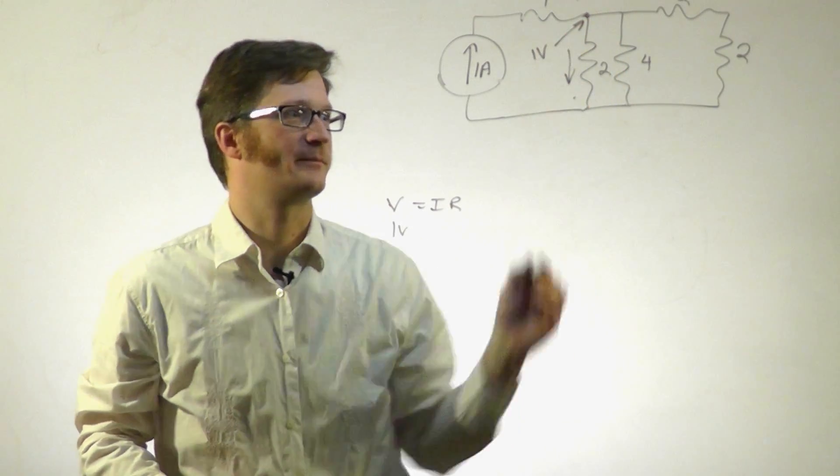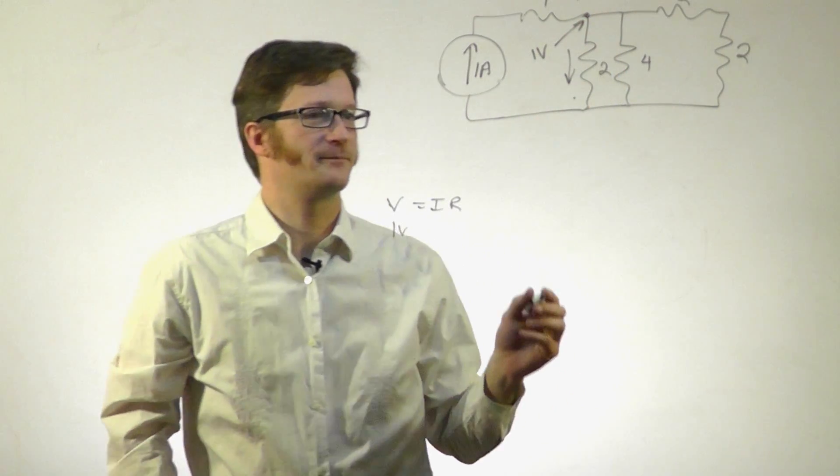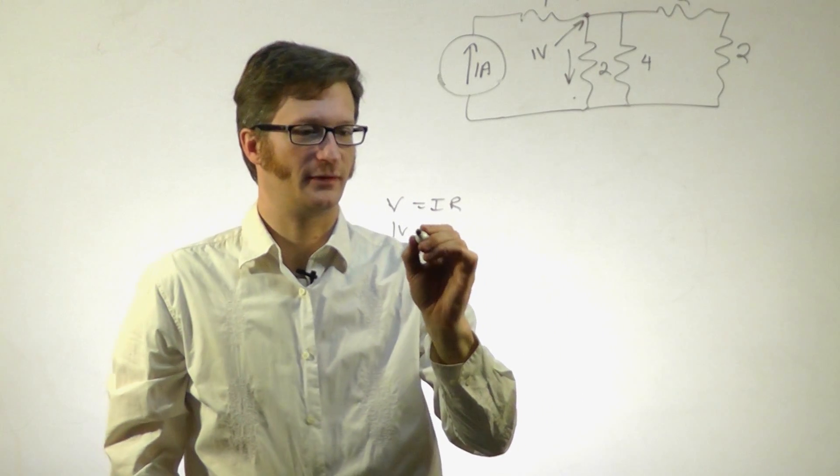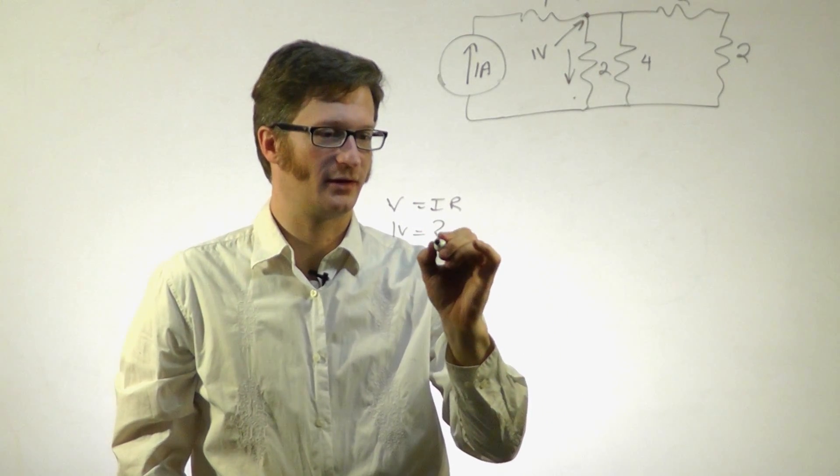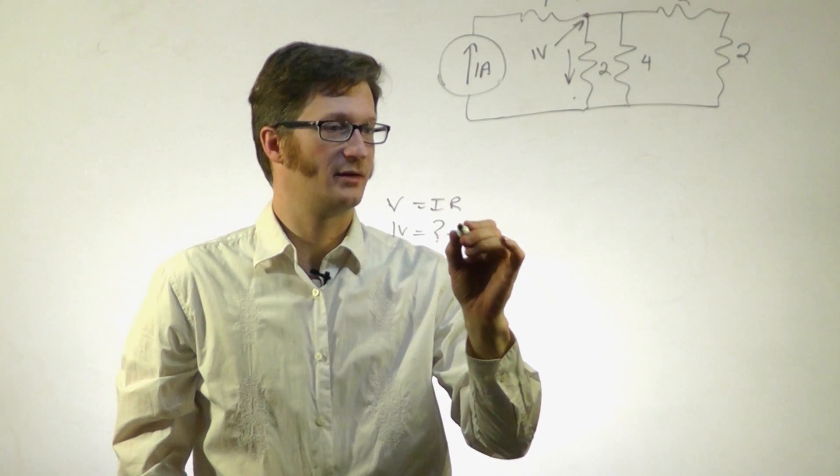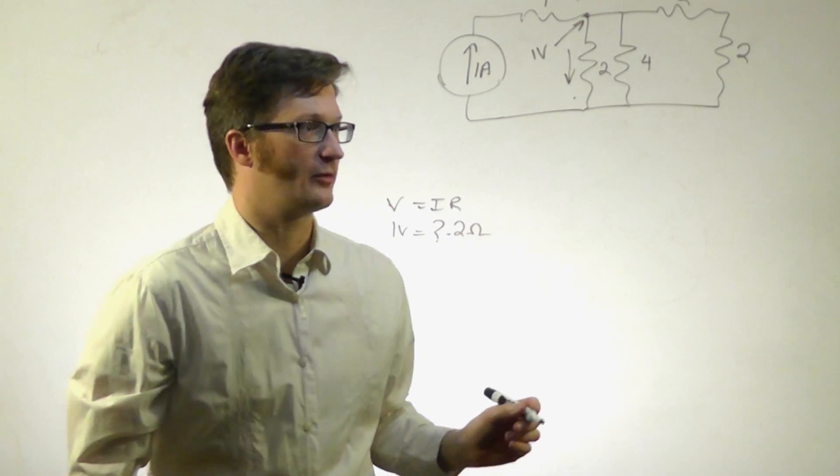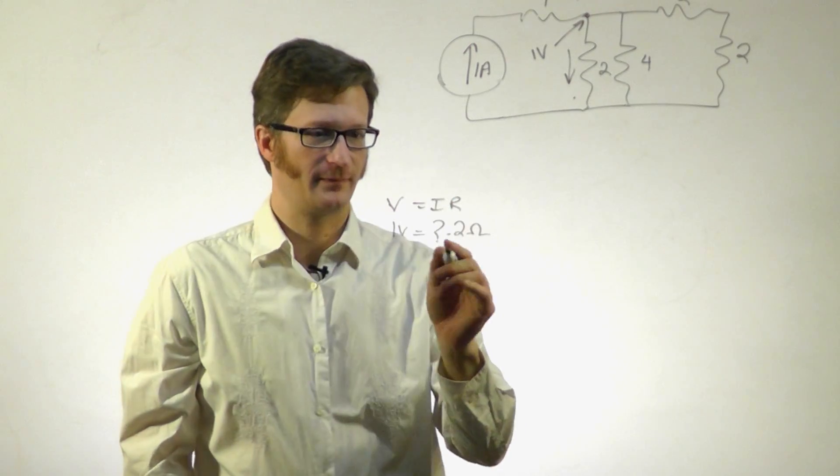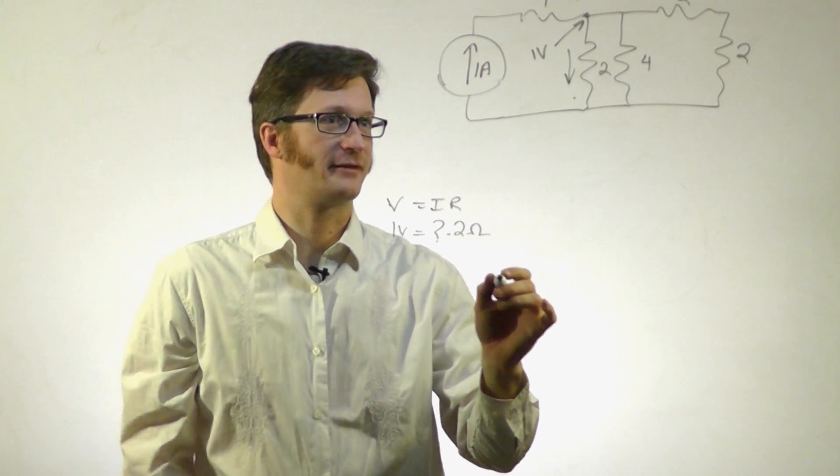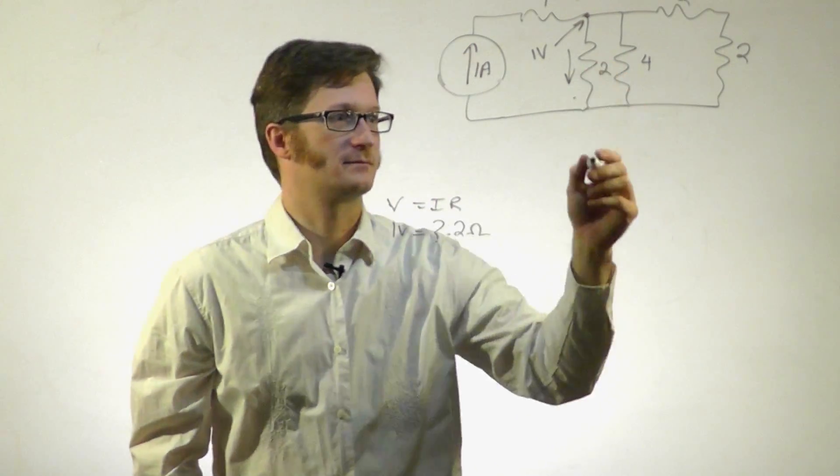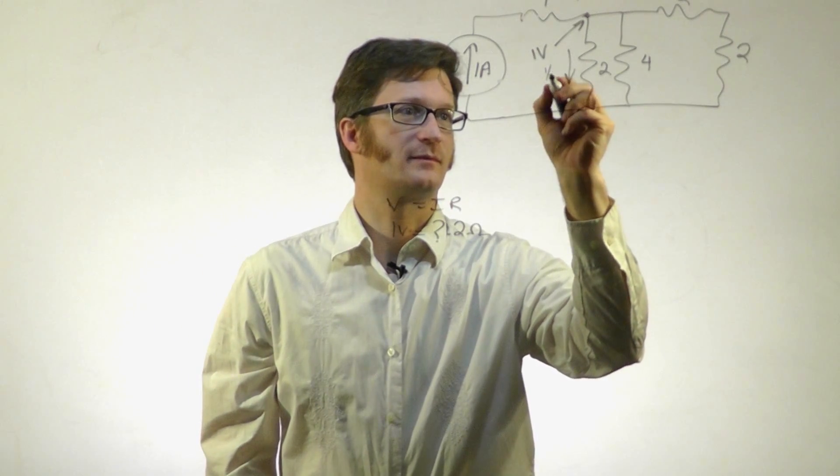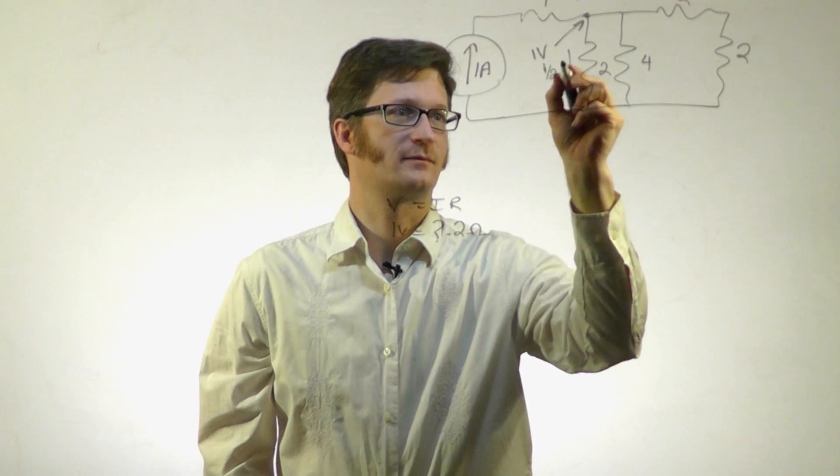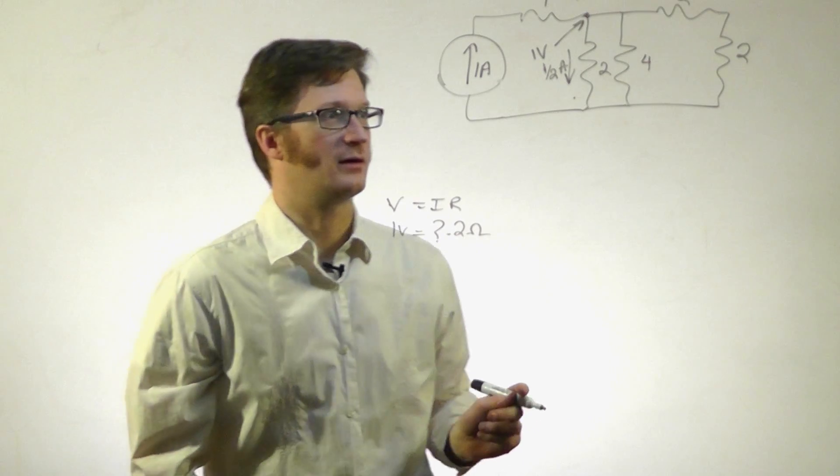1 volt equals unknown current times 2 ohms. Through this resistor right here, we have 1/2 amp.